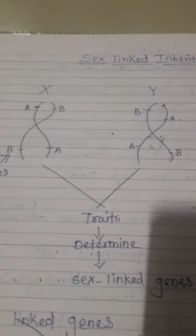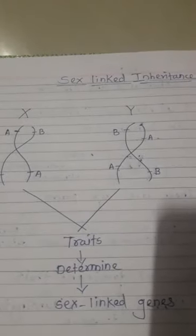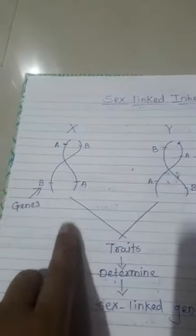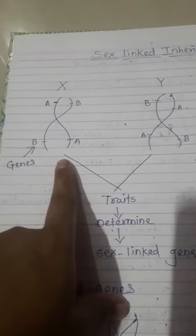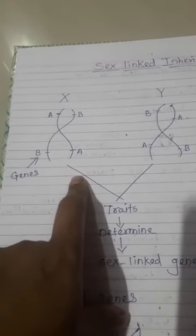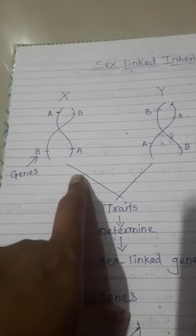What is meant by sex-linked inheritance? Genes located on a non-homologous region of the sex chromosomes — the X chromosome and Y chromosome — are called sex-linked genes. The sex chromosomes sometimes have homologous genes, and sometimes genes are present in a non-homologous region. Genes located in the non-homologous region of sex chromosomes are called sex-linked genes.